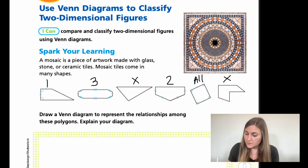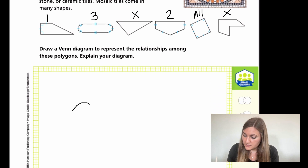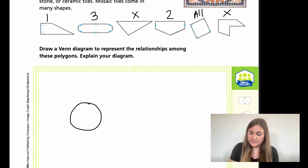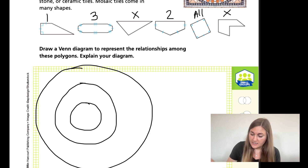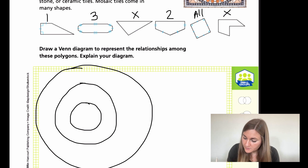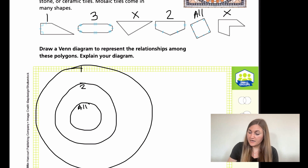So what we're going to do is draw the innermost circle — that's going to be all of the sides. Then I'm going to make it a little bit bigger — these are going to be two or more. And then this really big one is going to be just one pair. I'm going to label it: the innermost says 'all,' then 'two,' then 'one,' and then outside is going to be 'none.'